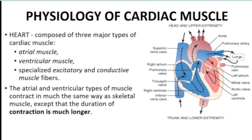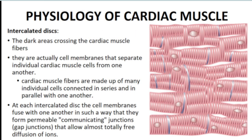How is the heart able to contract as a unit? How does it maintain its pace and coordination? It is able to do that because of two important characteristics. First, cardiac muscle fibers are branching — they are connected to one another through inter-branching, making it easy for the entire heart to act as one unit, where all parts contract simultaneously.